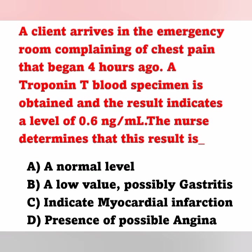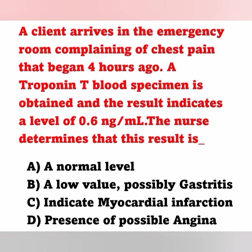Next question: a client arrives in the emergency room complaining of chest pain that began four hours ago. A troponin T blood specimen is obtained and the result indicates a level of 0.6 nanograms per mL. The nurse determines this result is — Option A: a normal level. Option B: a low value, possibly gastritis. Option C: indicative of myocardial infarction. Option D: presence of possible angina. Troponin is a regulatory protein found in skeletal and cardiac muscle.